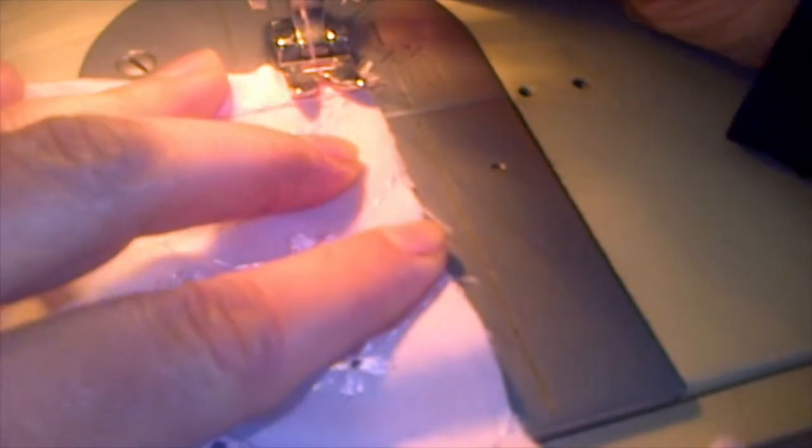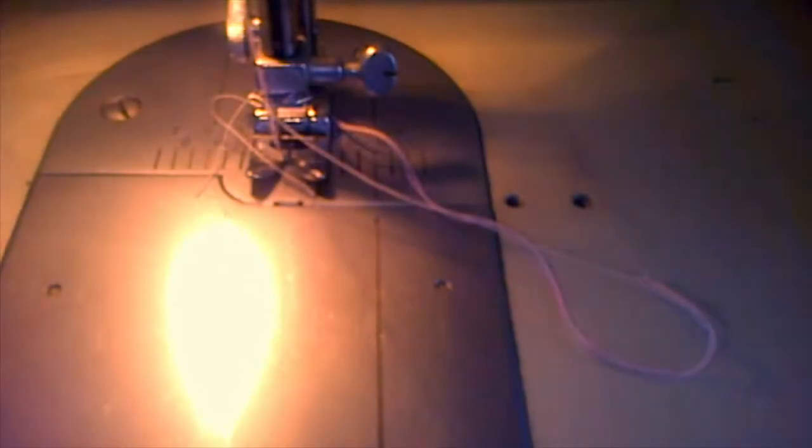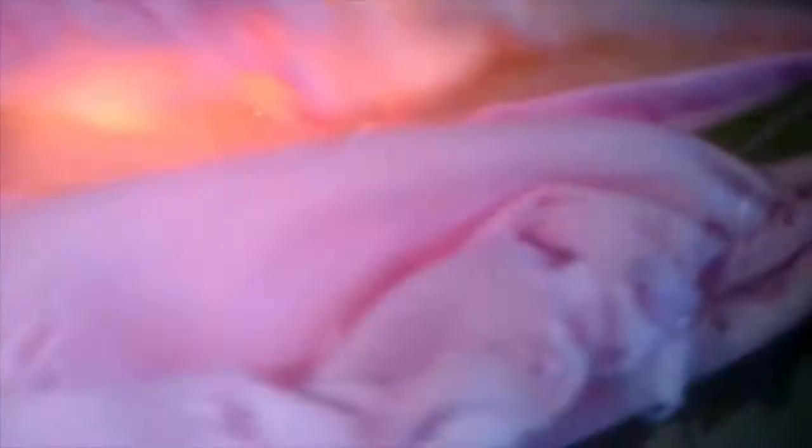Now our second step is to run gathering stitch all around the neckline. For that set your machine on longest stitch and then pull the bobbin thread. To make gathering I think it's very easy to hold both ends of the thread and pull. This way it's a lot more easy to have even gathering all around plus you don't lose one end accidentally.